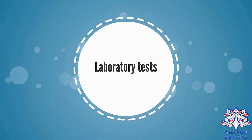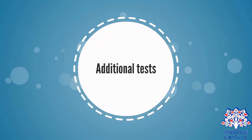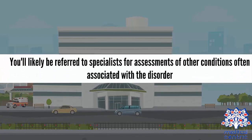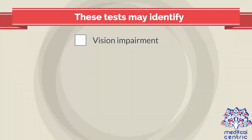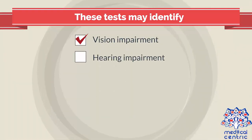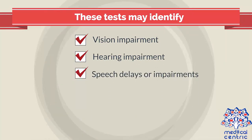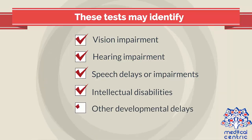Laboratory tests may also screen for genetic or metabolic problems. If your child is diagnosed with cerebral palsy, you'll likely be referred to specialists for assessments of other conditions often associated with the disorder. These tests may identify vision impairment, hearing impairment, speech delays or impairments, intellectual disabilities, other developmental delays, and movement disorders.